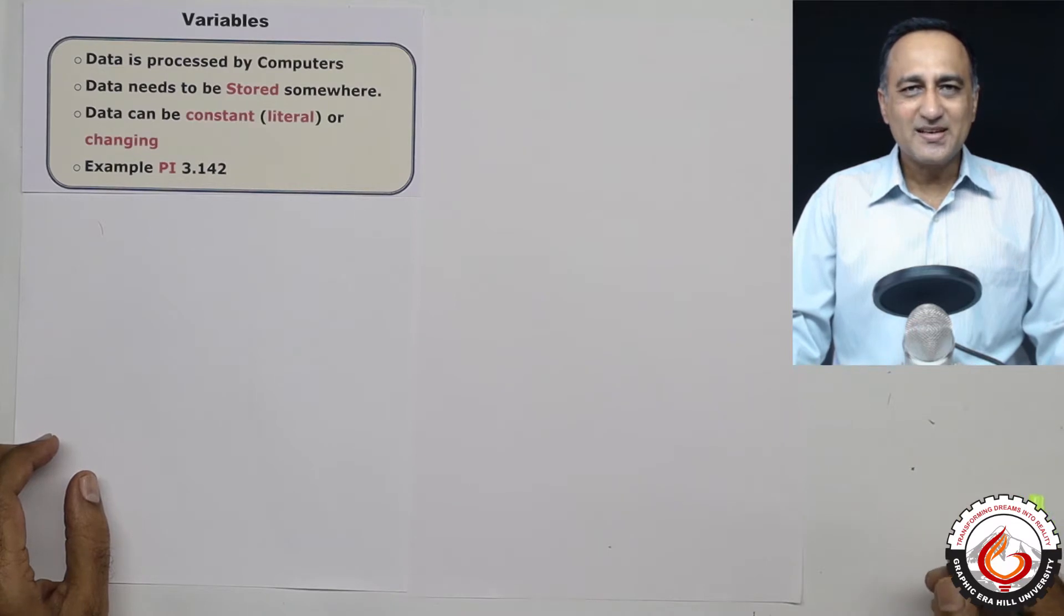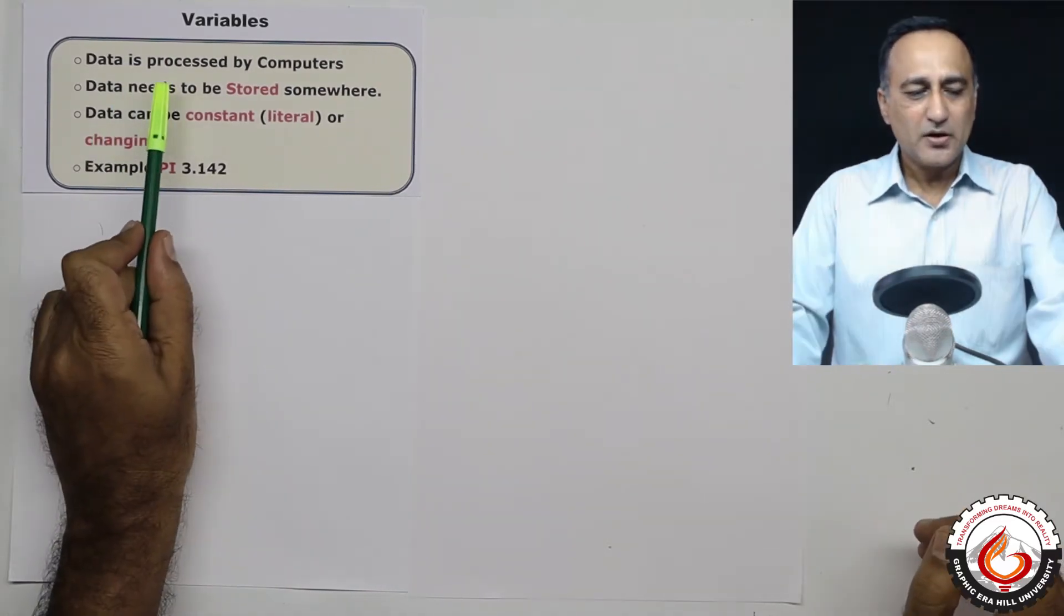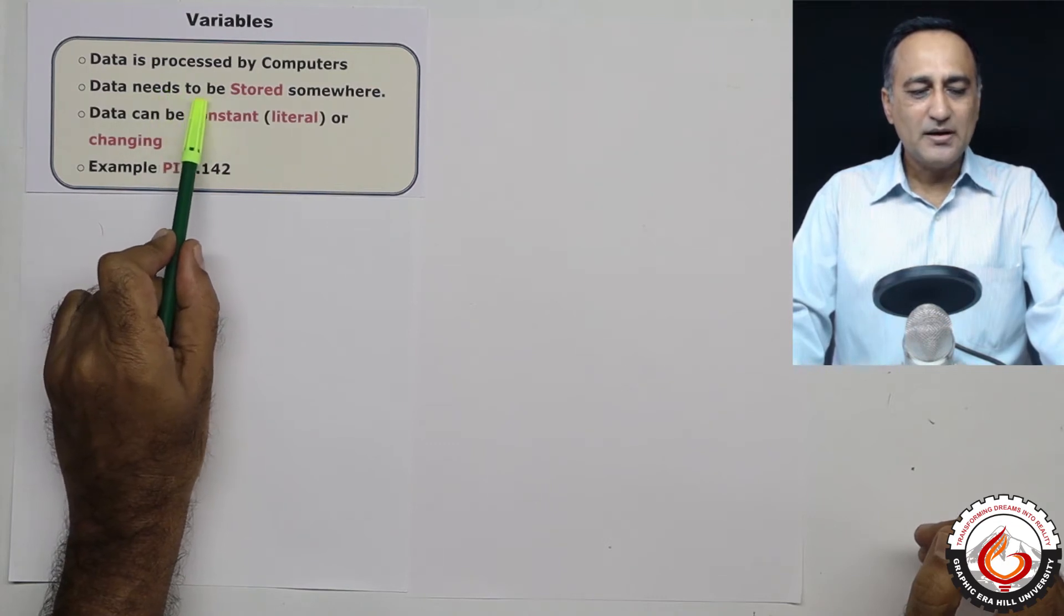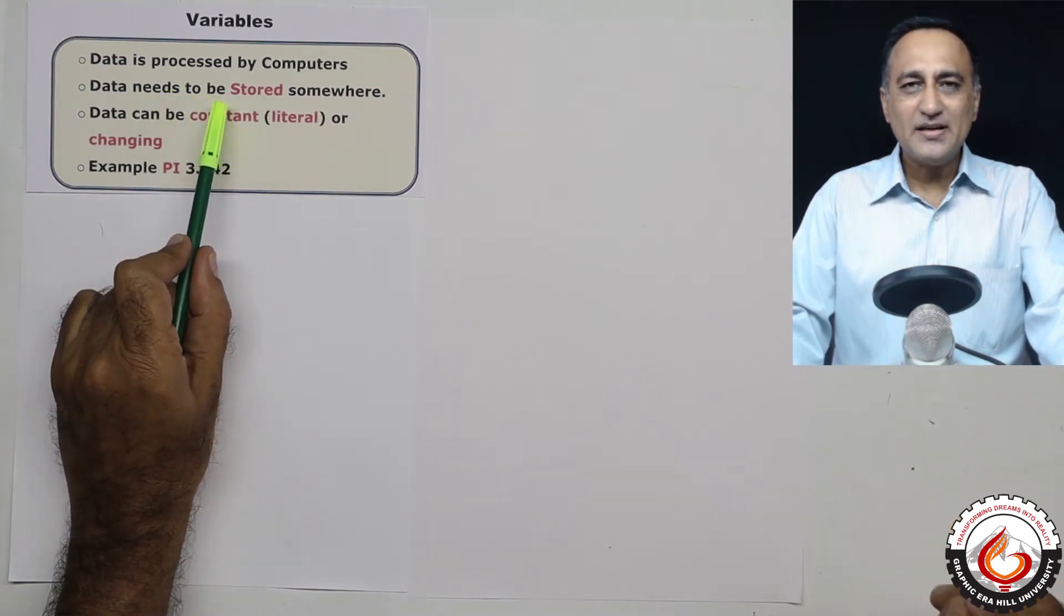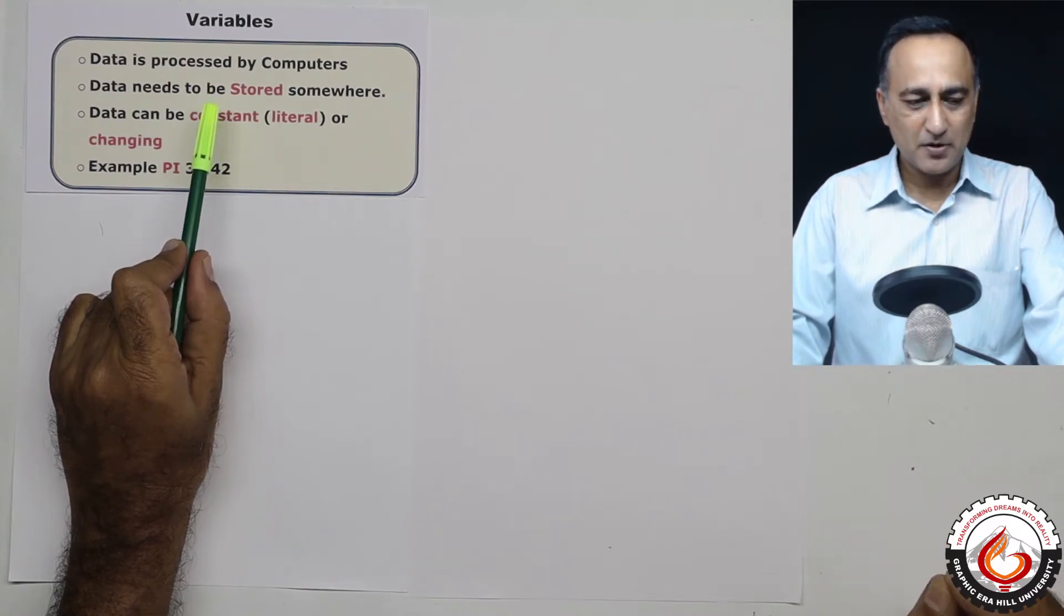Data is the reason why programs exist and data is processed by programs we write on computers. Now the data which is available needs to be stored somewhere in the main memory of the computer, also called as the RAM or the random access memory.